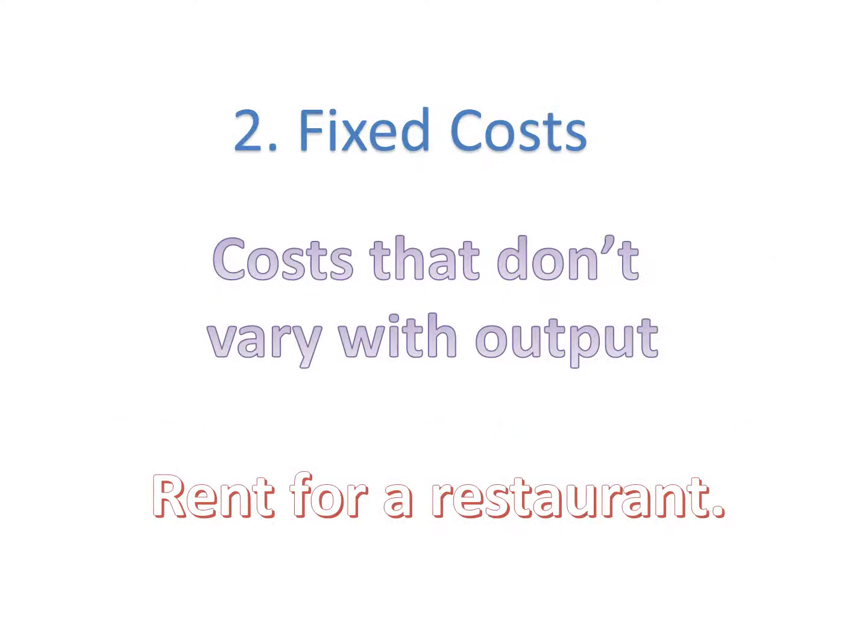Fixed costs are costs that don't vary with output. As output goes up and up, the fixed costs stay exactly the same. Rent for a restaurant is an example of a fixed cost. Imagine you start a restaurant and rent the land, paying $1,000 a week — you pay that $1,000 no matter what. If you have zero customers or hundreds of customers, you still owe $1,000 a week.